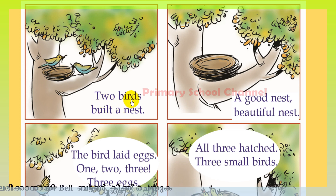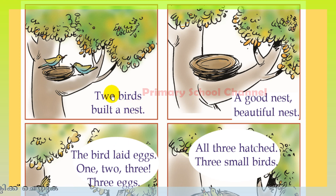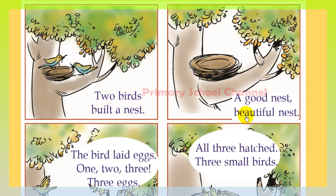How many birds are here? Two birds. They built a nest. Now look at the next picture. What is this? This is a nest. A good, beautiful nest.